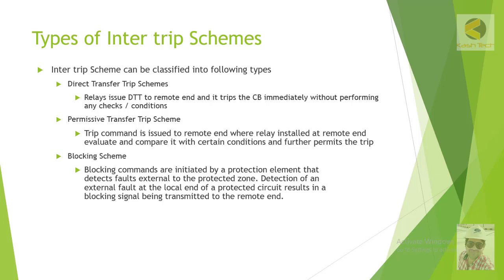So there are three types of basic protection schemes. In the Direct Transfer Trip scheme, the relay at one end — for example, Station A — sends a trip command to Station B at the remote end, and the remote end trips immediately without making any logical decision or evaluating any local conditions.